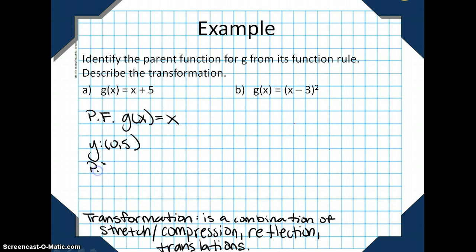Well, if a parent function y-intercept is 0, 0, what's the change? It's on the y. Specifically, it's 5 units up. So the transformation would be a translation 5 units up. Because it does tell you to describe the transformation.